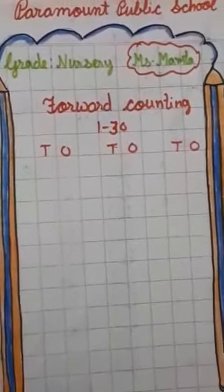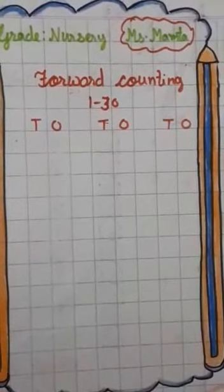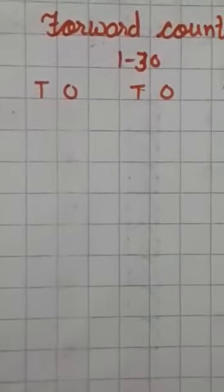I am Mamata Sharma on behalf of Paramount Public School. Students, in previous video we have done 1 to 20. Today we will do 1 to 30. Let's start. Students, speak with me.